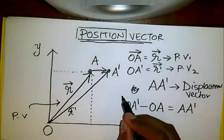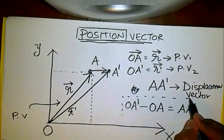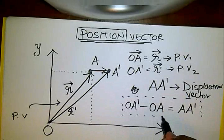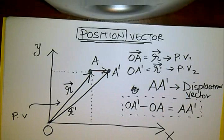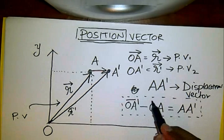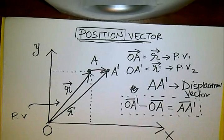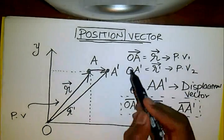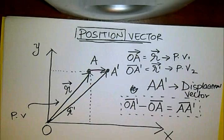Now, this part is not that important right now, because when we talk about addition and subtraction of vectors, is when you understand this really well. Just for now, it could be thought of as OA dash minus OA. Remember, these are vectors, so we put a dash over it. So that is our displacement vector.